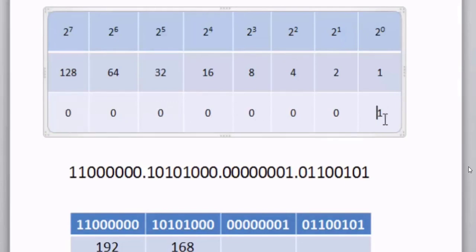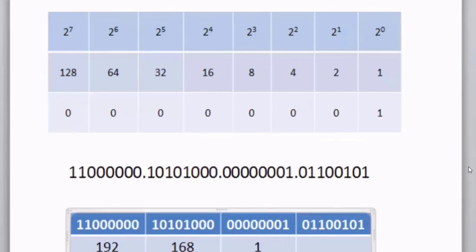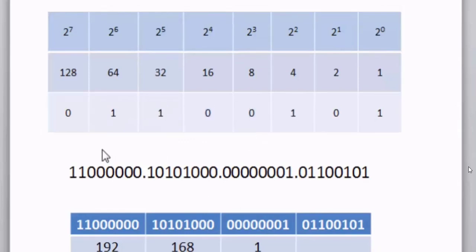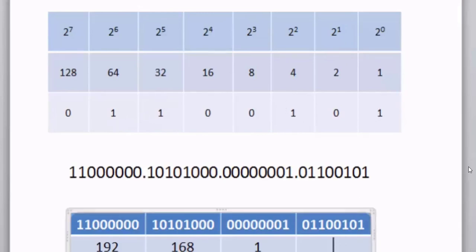And finally, we have the last octet. Plugging it into the table, I have 0, 1, 1, 0, 0, 1, 0, 1. We can see that 64 plus 32 is 96, plus 4 is 100, plus 1 is 101. So the conversion of this binary IP address to decimal is 192.168.1.101.